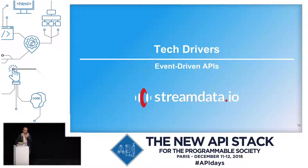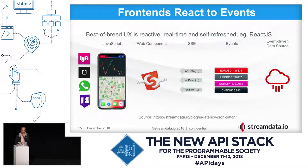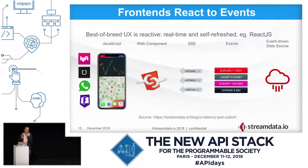We looked at business drivers for streaming. Now let's look at some trends that are as important because they support them. First is reactive frontends. Frontends now — for most of them — are using a reactive framework. A reactive framework by design means it's reacting to events. There is a bus, called observables sometimes, and the UI will fetch events from the bus and present them. That's already event-driven.